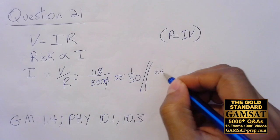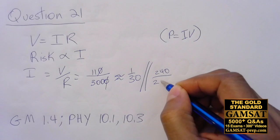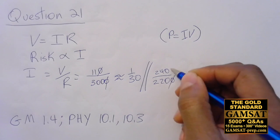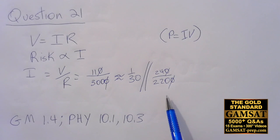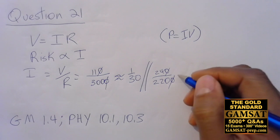In the second situation, we have 240 divided by 2200. Zeros cancel, we have 24 over 220, which is not very far from 22 over 220, so this is approximately 1 over 10.